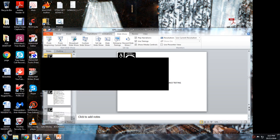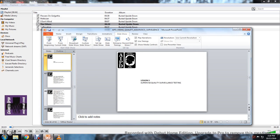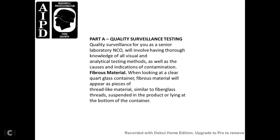Lesson 3: Supervise Quality Surveillance Testing. Part A: Quality Surveillance Testing. The senior laboratory NCO must have thorough knowledge of visual and analytical testing methods, as well as causes and indications of contamination. Fibrous material, when viewed in a clear quart glass container, will appear as thread-like material similar to fiberglass threads suspended in the product or lying at the bottom of the container.